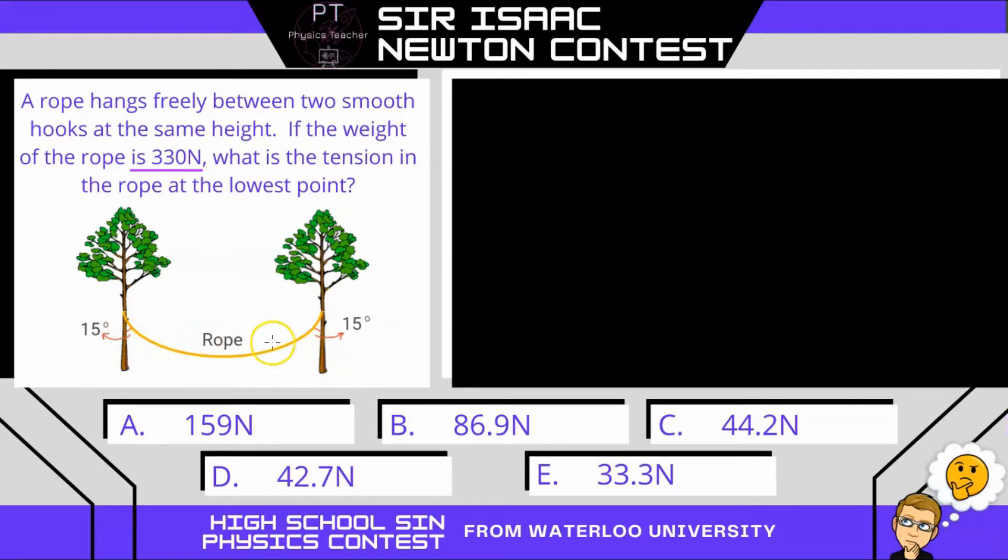So when we look at a free body diagram, because of the symmetry, I'm going to look at only half the rope. So right at this point here, the tension is going to be up in this direction. And if we draw a vertical line here, we can split the tension into its vertical and horizontal components, where this angle here is 15 degrees.